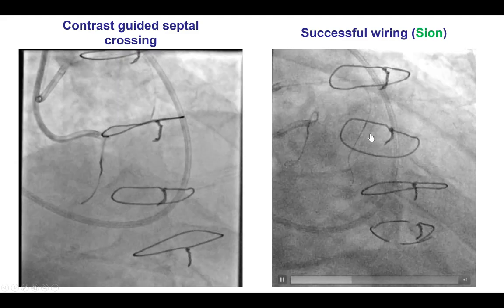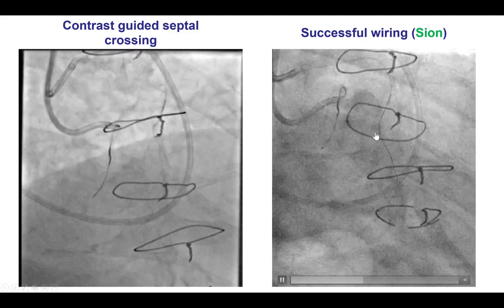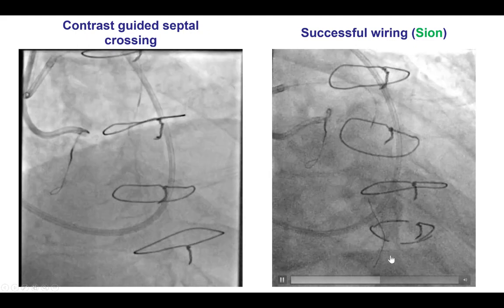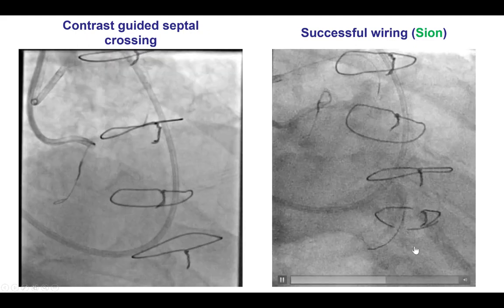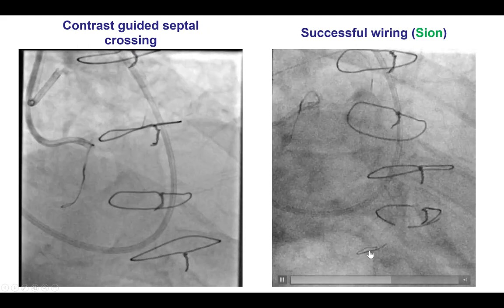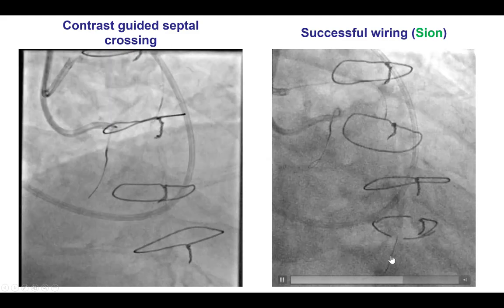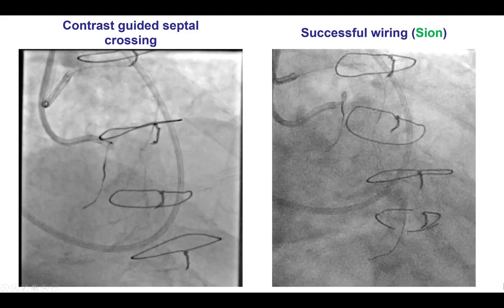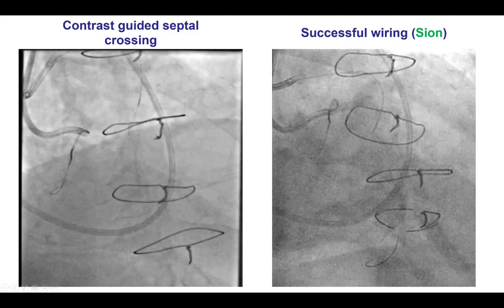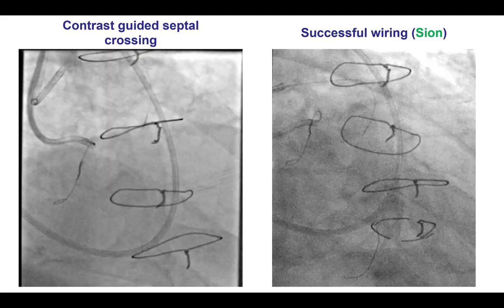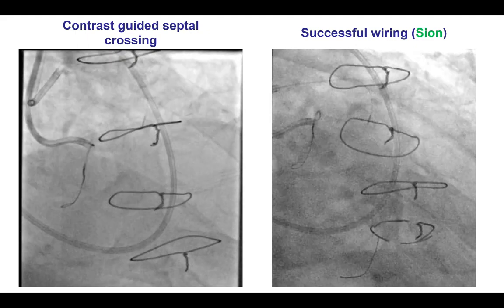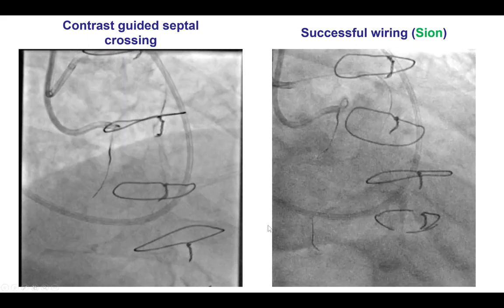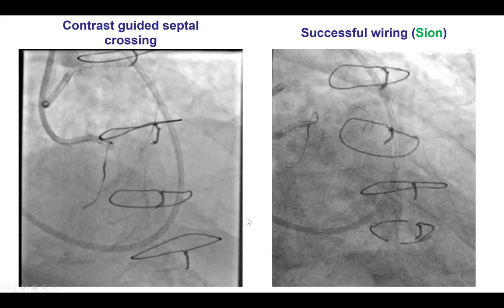This is surfing through a septal collateral branch. Using a Sion guidewire, we were able to advance it distally. It was initially going into the right posterolateral, so it was moved back and redirected, and eventually it did find its way distally into the mid-right coronary artery.